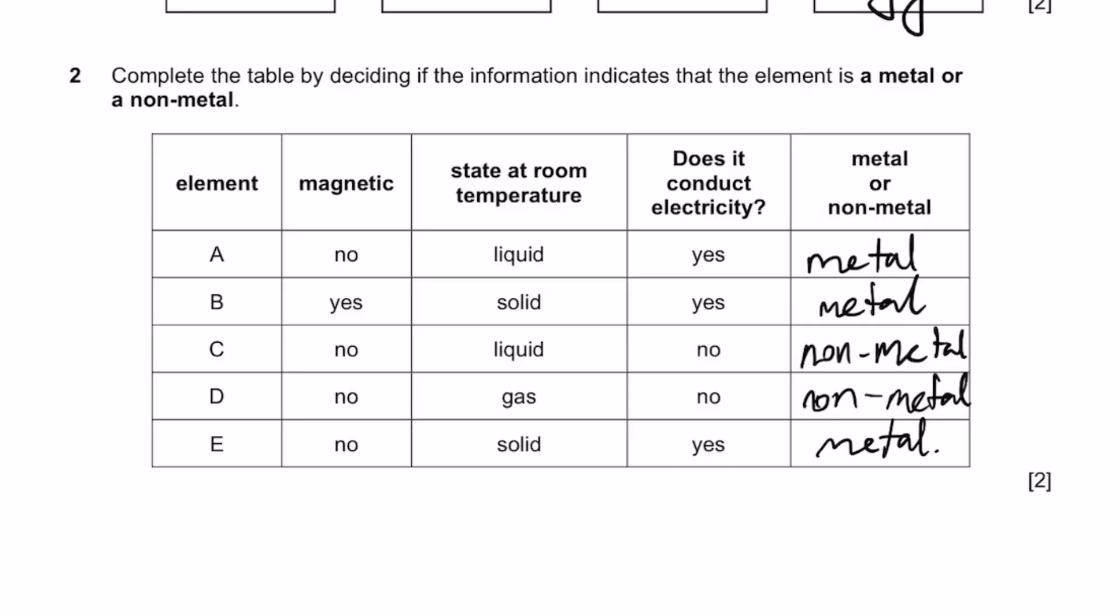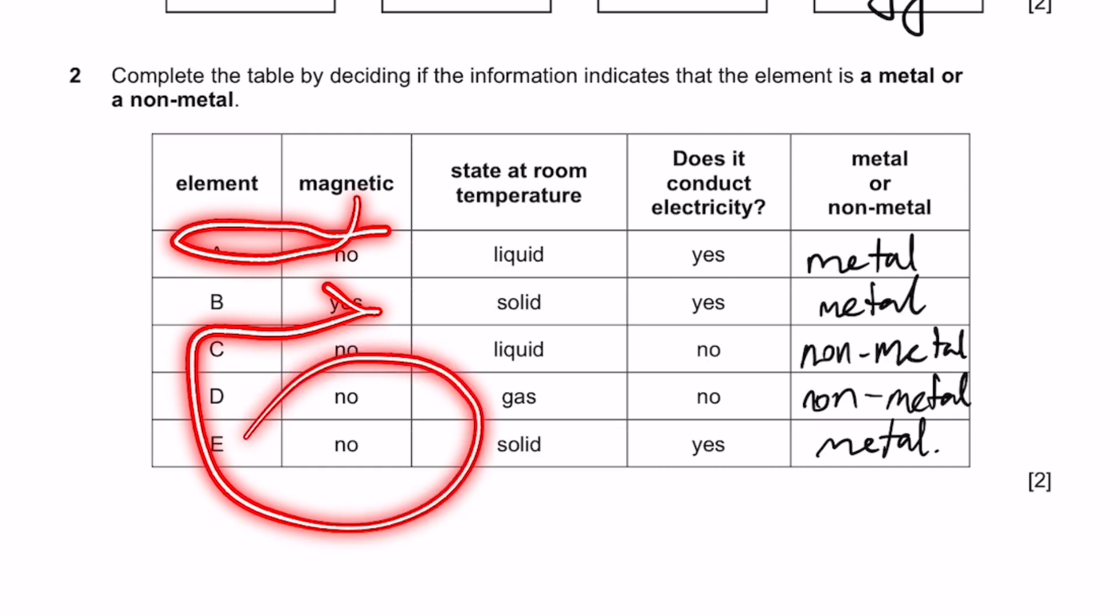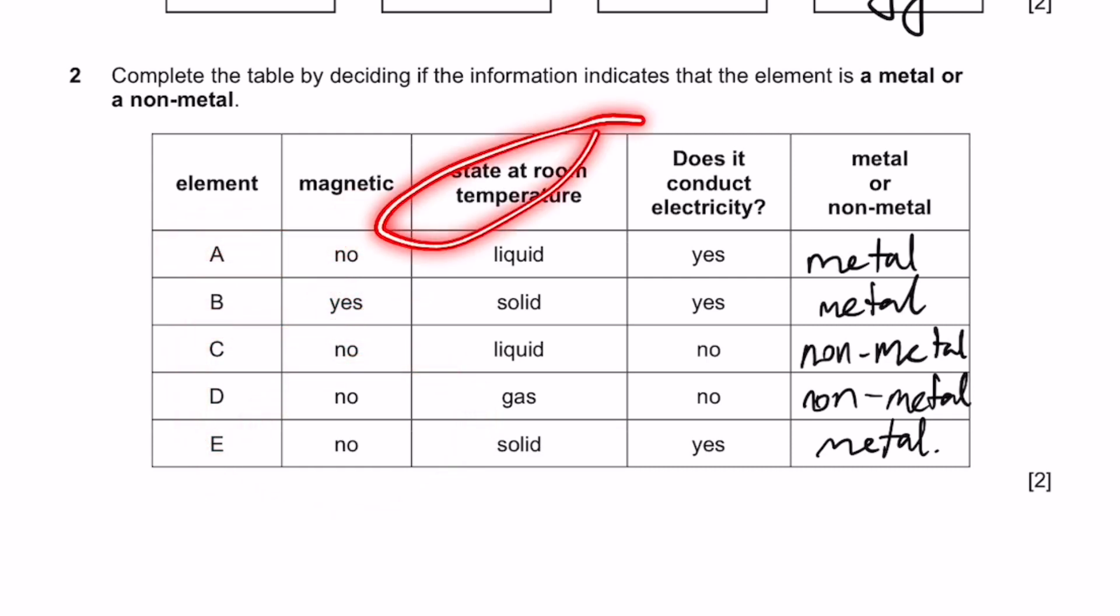Complete the table by deciding if the information indicates that the element is a metal or a non-metal. The elements are A, B, C, D, E. Magnetic for everything except B is no. State at room temperature: A and C are liquids, B and E are solids, and D is a gas.